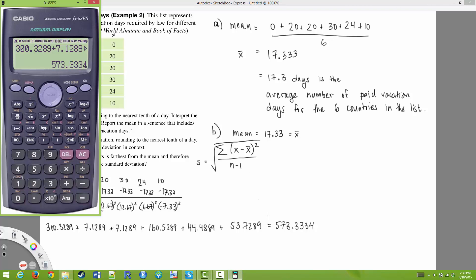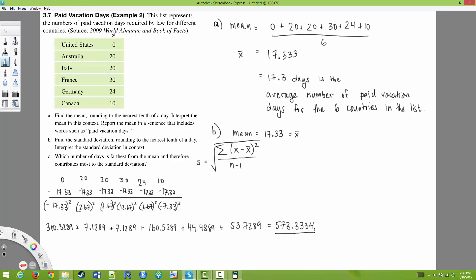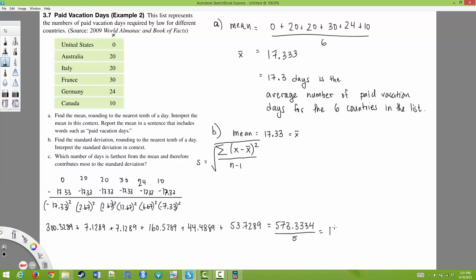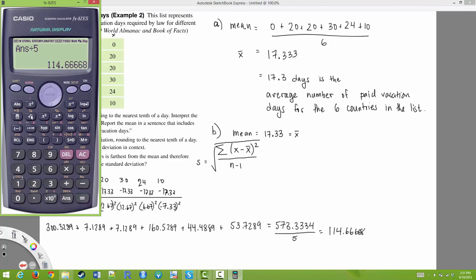And I'm going to divide that number by n-1. So this is adding up all of the squared deviations or squared differences. I'm going to divide this by n-1. And I have 6 countries. So 6 minus 1 gives me 5. So 573.334 divided by 5 gives me 114.6668. And then to get the standard deviation, I'm going to take the square root of this number. And I get a standard deviation of 10.708.